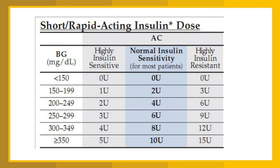Insulin infusions are preferred for inpatients. Most patients undergoing surgery or having complicated comorbidities are already on insulin before admission. Once they are admitted to the ICU or intensive care, we have no idea what their previous insulin pattern was, so insulin infusions are the best way to manage hyperglycemia for inpatients.